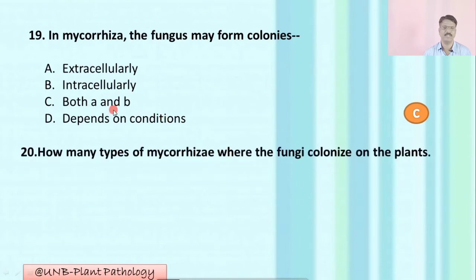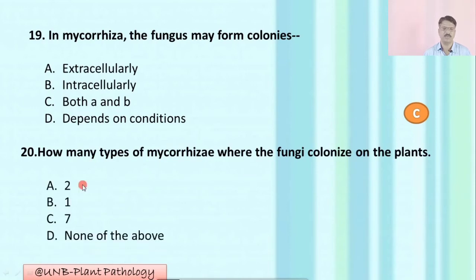Question number twenty: How many types of mycorrhizae are there where the fungi are colonized on the plants? A: two; B: one; C: seven; D: none of the above. The correct option is C: seven.